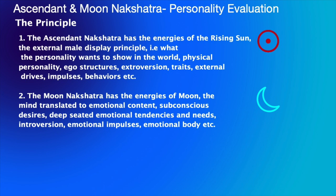The ascendant nakshatra is the first one we should examine. The next one is the moon nakshatra, which has the energies of mind as translated to emotional content — the subconscious desires, deep-seated emotional tendencies and needs, introversion, and emotional impulses. You can also call it the emotional body. This is the moon, the second luminary.